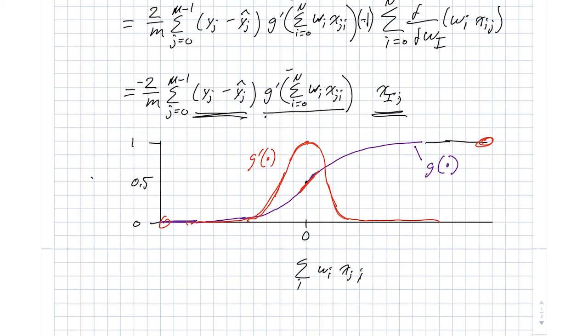So this is g prime. And for those who want to work through the math, I encourage you to go ahead and compute what that derivative actually is. But the point here is derivative is highest in the middle, and it is arbitrarily close to zero on either the left or the right-hand side. So let's imagine a couple of different situations here. So let's imagine that the true value, some yj, is actually one.